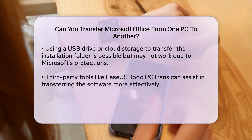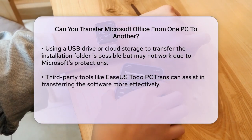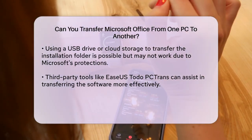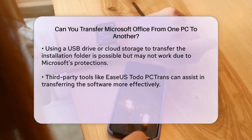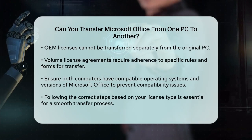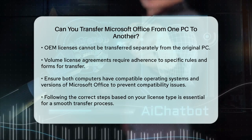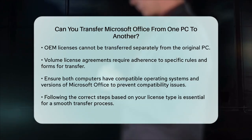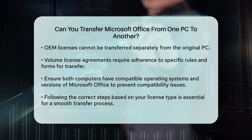For those who prefer a more manual approach, you can also check the license type of your Microsoft Office and transfer it accordingly. For instance, if you have an OEM — original equipment manufacturer — license, it cannot be transferred unless the PC and the licenses are transferred together. If you have a volume license agreement, there are specific rules and forms you need to follow to transfer the licenses. It's also crucial to ensure that both computers have compatible operating systems and versions of Microsoft Office to avoid any compatibility issues during the transfer process.